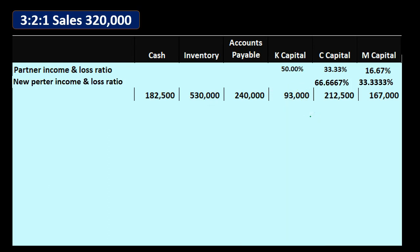We're going to go through our normal process through the closing process. First selling the inventory, then allocating that gain or loss to the capital accounts in accordance with their profit sharing agreement. Then we're going to see if there's any negative capital accounts and deal with them — there will be in this problem. Once dealt with, we will pay off the liabilities, then pay off the capital account balances. It has to be in this order — well, it doesn't have to be, but to avoid problems this is the preferred order, otherwise we're more likely to have negative capital accounts.